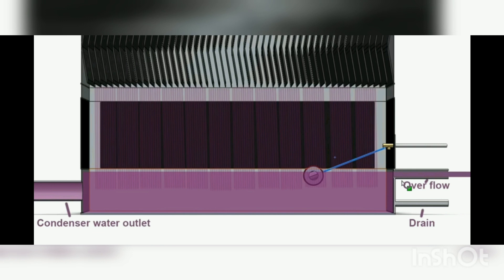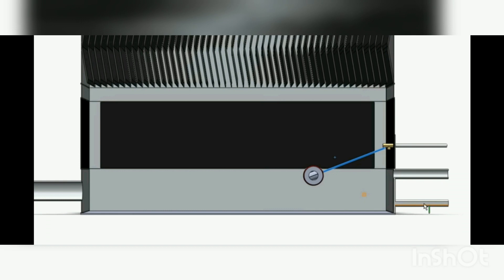The warmer water contains bacteria and salts. As the water evaporates, the water droplets go into the air but the salts remain in the water. These salts collect at the bottom of the basin, and we do not want them sent back to the chiller. That is why the drain pipe is provided — after a certain level of salt accumulation, the drain pipe removes them along with the basin water. The inlet pipe then maintains the water level.